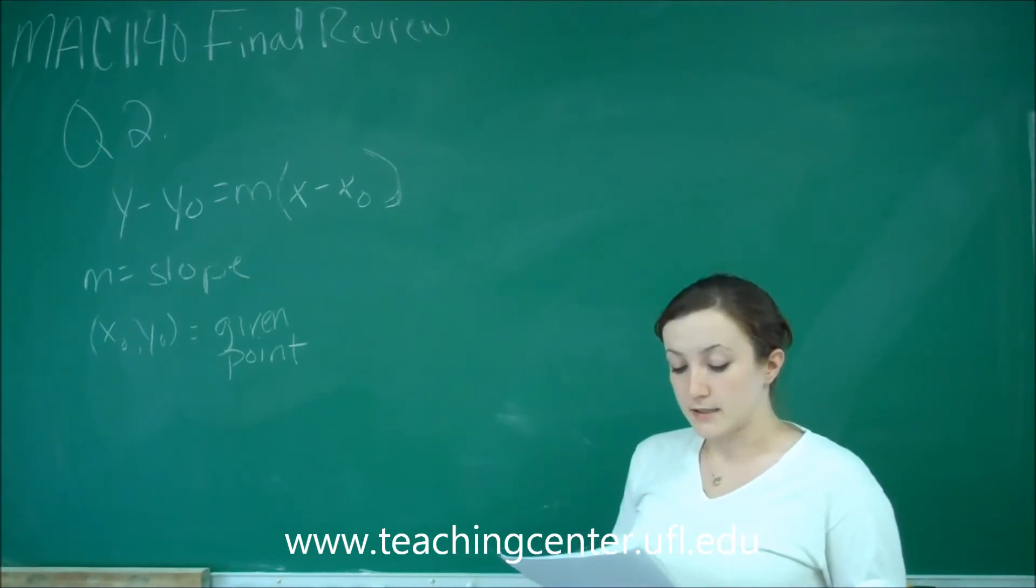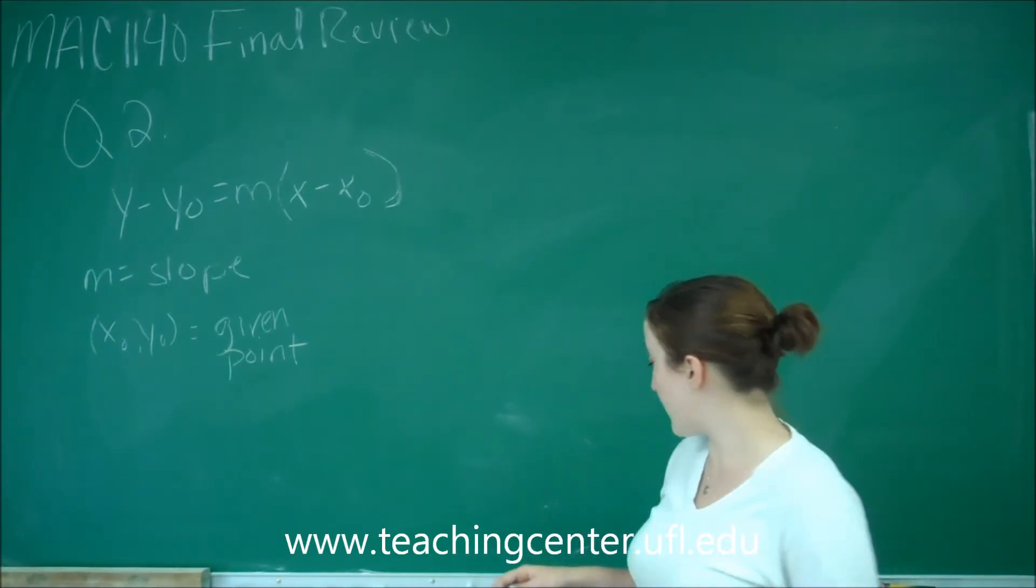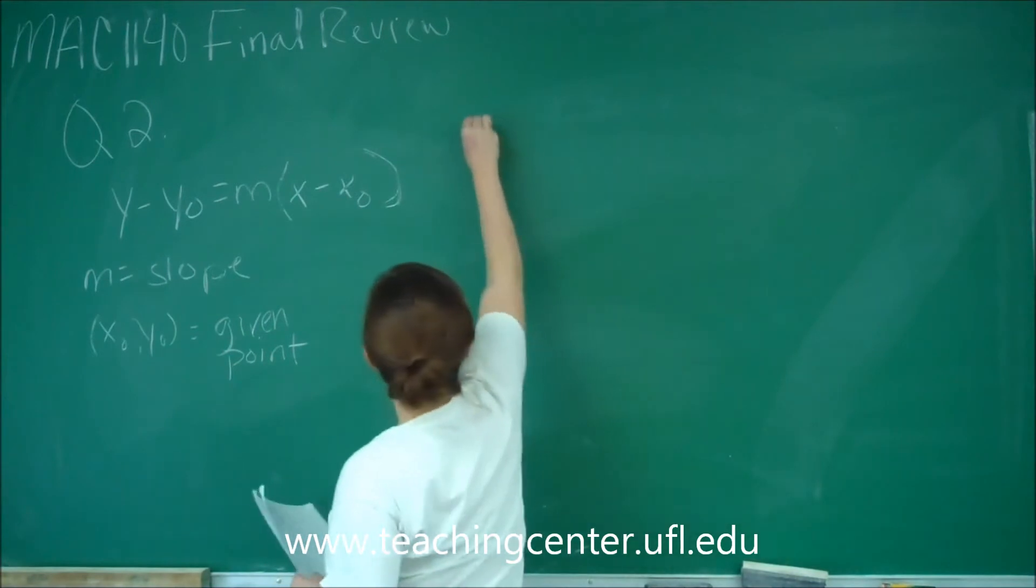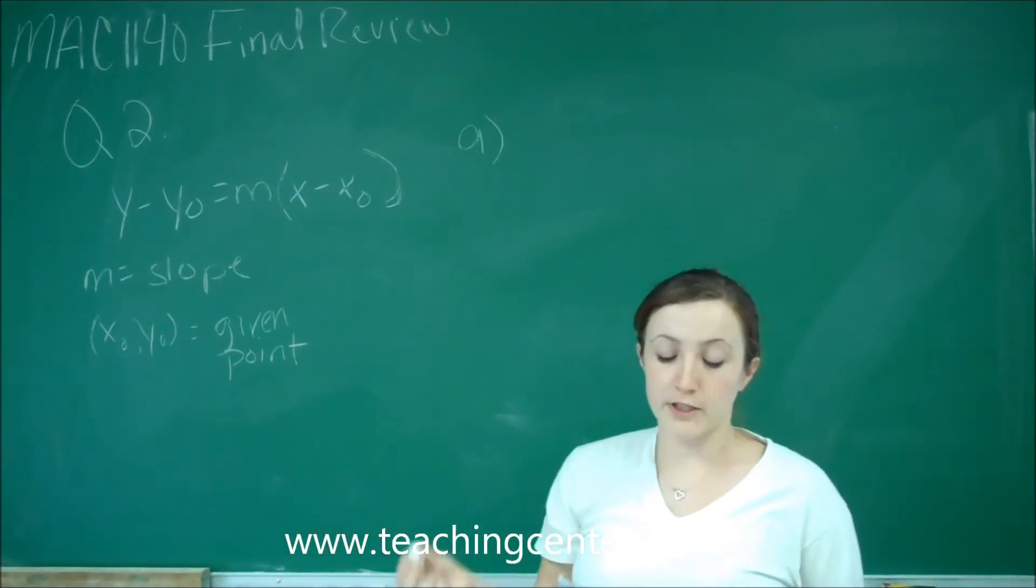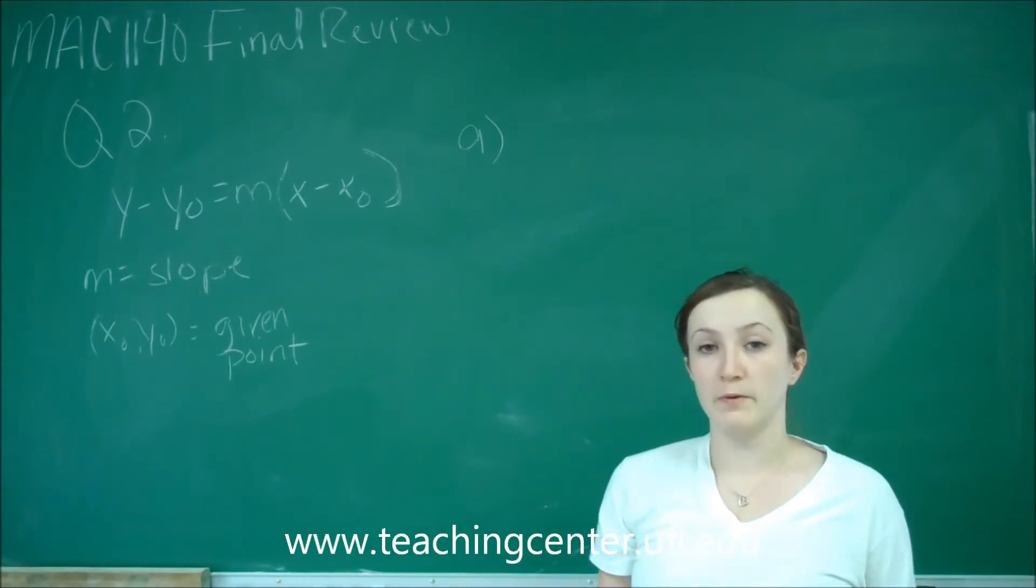Part a asks us: if two lines are parallel, how are their slopes related? And then what if perpendicular?